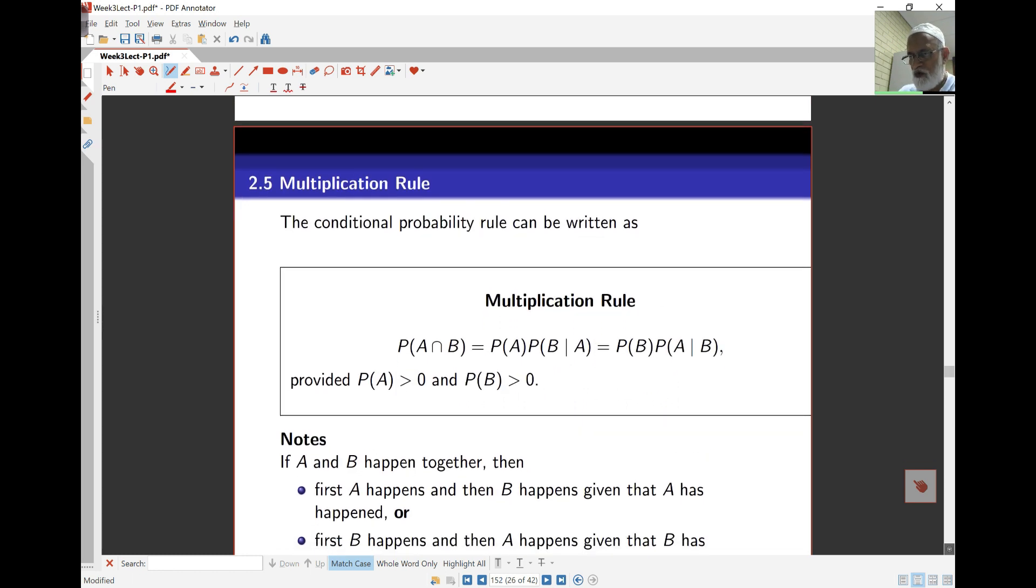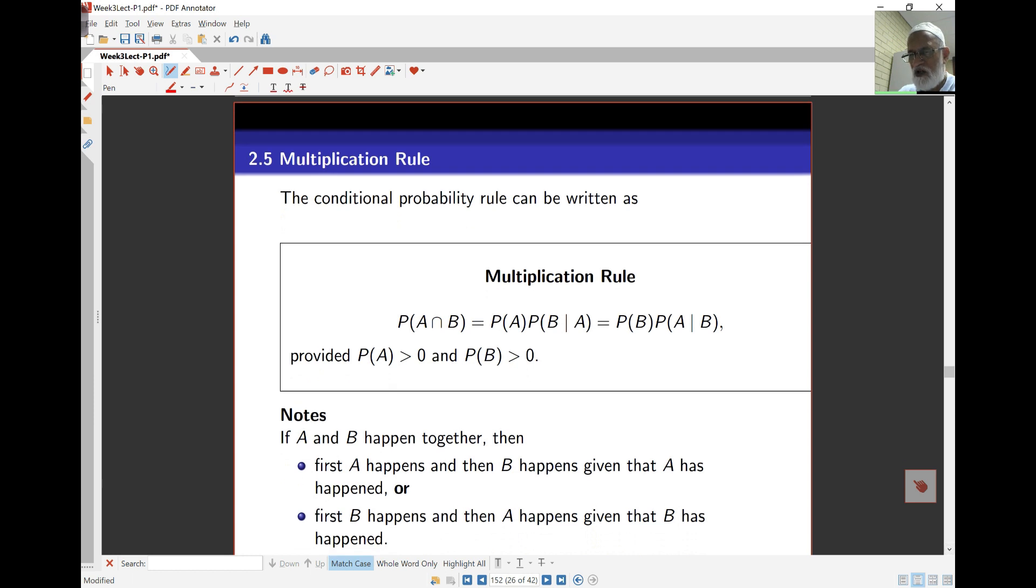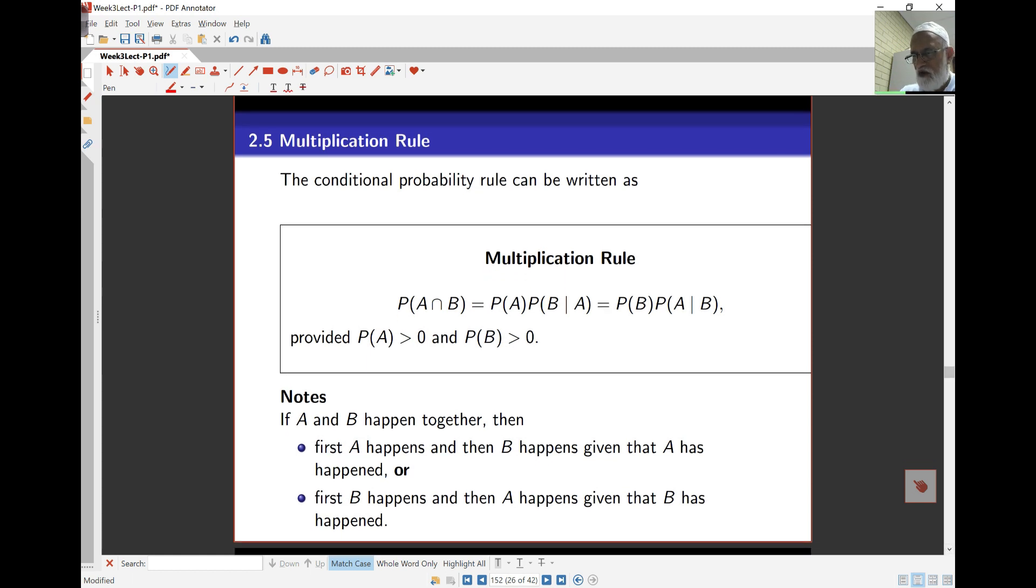Multiplication rule is the next important rule, and this is just a matter of turning around the rule for conditional probability. So we know probability of B given A was probability of A intersect B divided by probability of A. If I turn it around, then probability of A intersect B is probability of B times probability of A given B.